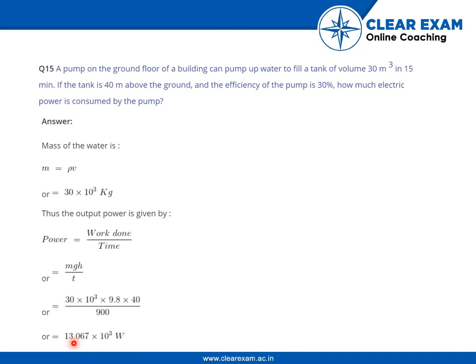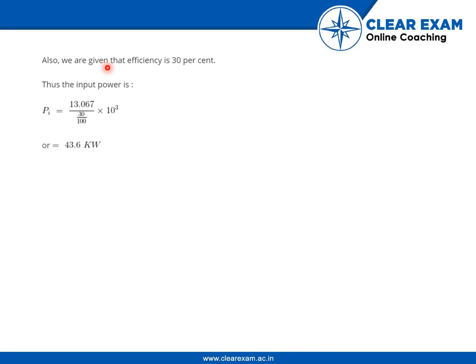Also, we are given the efficiency is 30 percent, so the input power is this divided by 30 by 100.